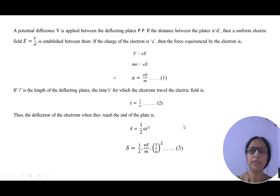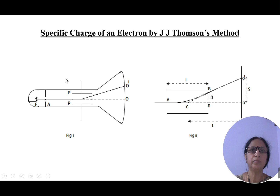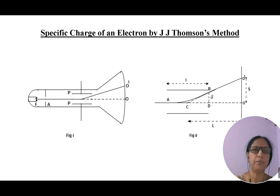The experimental setup is as shown in the diagram. It consists of an evacuated glass tube with an electron gun at one end and a fluorescent screen at the other end. The electron gun consists of a filament which, when heated by a low tension battery, ejects electrons. These electrons are accelerated towards the anode by maintaining a potential difference between F and E. The accelerated electrons escape through the hole in the anode, giving rise to a pencil beam of electrons which passes through the deflecting plates P and P.